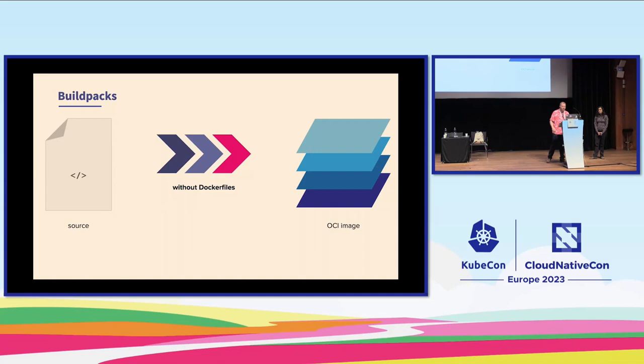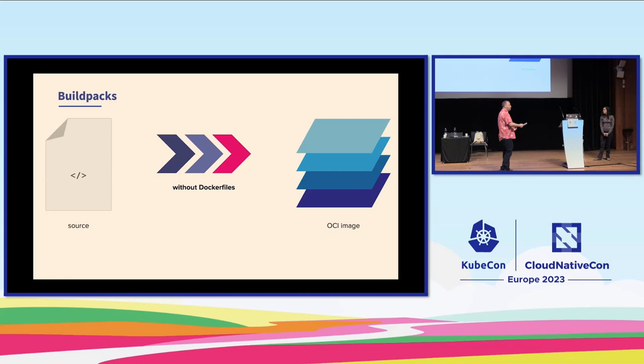The question I always ask myself is: what problem are we solving? The problem that buildpacks are trying to solve is: given my application source code, how do I get an OCI image at the far side? That's it — given my application source code, how do I generate an OCI image, also known as a Docker image, something you can deploy on Kubernetes, or do a Docker run or Podman run with.